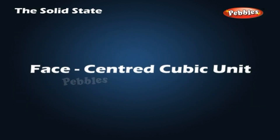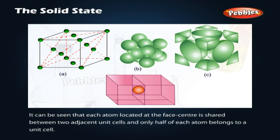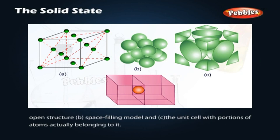Face-centered cubic unit cell. A face-centered cubic unit cell contains atoms at all the corners and at the center of all the faces of the cube. Each atom located at the face center is shared between two adjacent unit cells, and only half of each atom belongs to a unit cell. Shown are the open structure, space-filling model, and the unit cell with portions of atoms actually belonging to it.